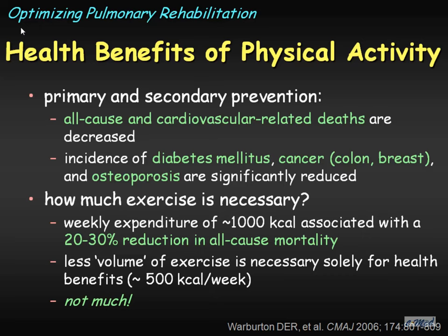You don't need much exercise for the normal population to realize these benefits. About 1,000 kilocalories are associated with a 20% to 30% reduction in all-cause mortality. That's sort of where the 30 minutes, 3 or 4 times a week of increased activity originates from. That little, in a normal population, has been associated with a mortality benefit. Half of that — 15 minutes, 3 or 4 times a week of moderate activity — has been shown to be associated with reductions in diabetes, cancers (in particular colon and breast), and osteoporosis. In a normal population, exercise is good, and not much exercise is necessary to realize significant benefits.